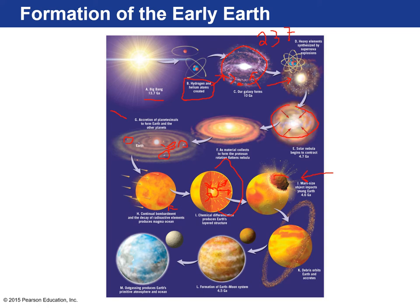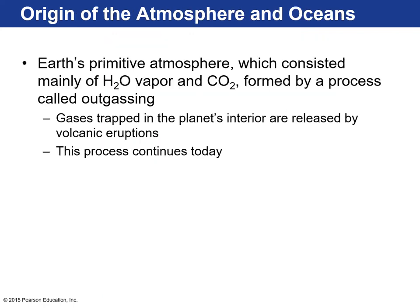At some point early in Earth's history, a Mars-sized planetesimal also orbiting the Sun struck the Earth. About three-fourths of its mass was added to the Earth, and the rest got caught in Earth's gravity, coalesced, and that formed our Moon. That's the origin story of our Moon. Over geologic time, here we are — our modern Earth.